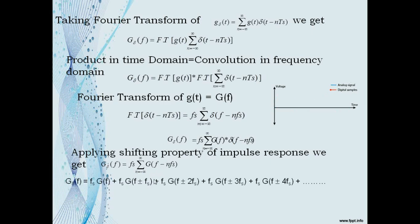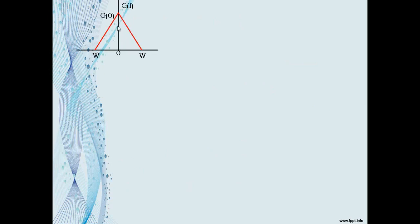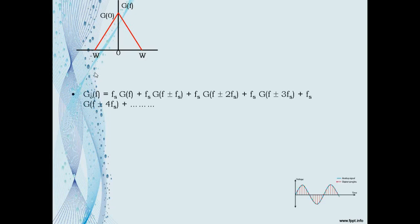We can expand the summation as: Fs·G(f) when n = 0, Fs·G(f ± Fs) when n = ±1, and so on. The spectrum of the continuous signal G(t) is given as G(f), which lies between −W and +W. The sampled signal is represented as G_δ(f) = Fs·G(f) + Fs·G(f ± Fs) + ...